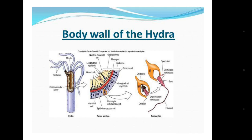On their body surface, cnidarians have a special structure called the cnidoblast, and inside the cnidocyte there is a lasso-like, rope-like structure. When they sense any microorganism or food, they throw out this lasso-like structure and capture their prey. The cnidoblast is a special and defining structure of the cnidarians.